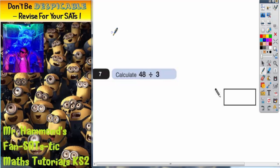So the most efficient and quickest way, because we're dividing by a small number less than 10, would be to use the bus shelter. So we'd set it up like this.